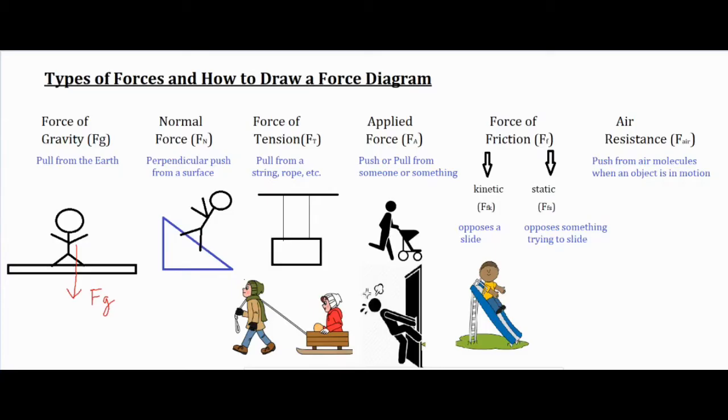For our second force, the normal force, that one is not commonly recognized. It is a perpendicular push from a surface. It's often known as a support force. The word normal in this context actually means perpendicular, so you want to make sure that your arrow creates a 90 degree angle with your surface.